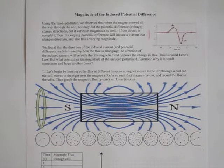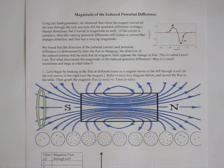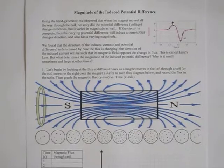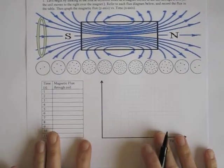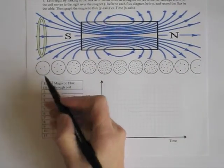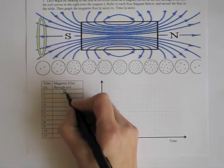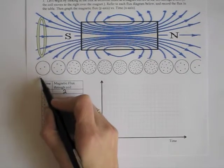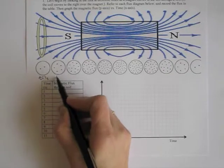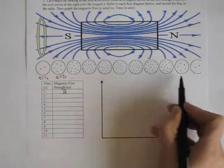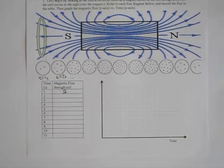Refer to each flux diagram below and record the flux in the table, then graph the magnetic flux versus time. This is the same diagram you had in last week's homework. Using the flux diagrams, we can see that the flux would be two — so magnetic flux through the coil is two at time one. Go ahead, pause the video, and complete the table.